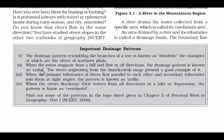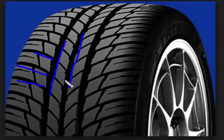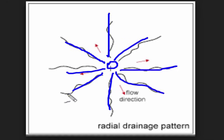The second type of drainage pattern is radial. You must be familiar with radial tires — they have a center with patterns going 90 degrees outward. Similarly, a radial drainage pattern has a center and everything flows outward in straight directions from that center. Whenever this term comes up, remember the radial tire example.